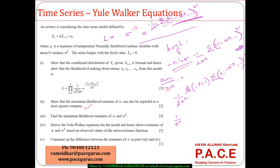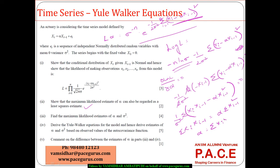Simplifying, we get the summation of xi times xi minus 1 equals alpha times the summation of xi minus 1 squared. Therefore, alpha is estimated as the summation of xi times xi minus 1 divided by the summation of xi minus 1 squared. This is the MLE estimate of alpha from this expression.